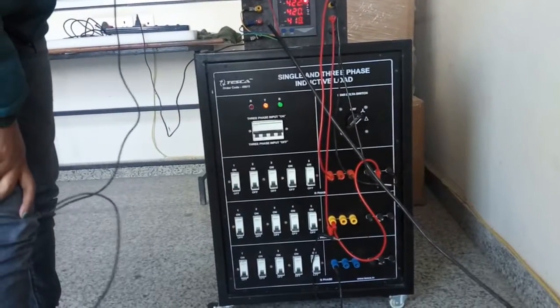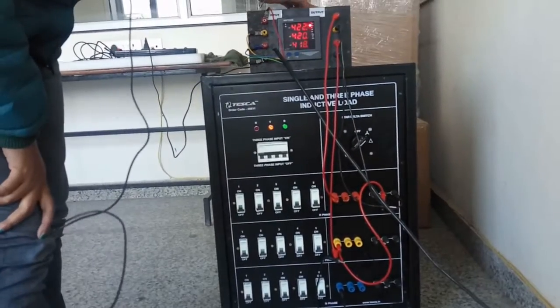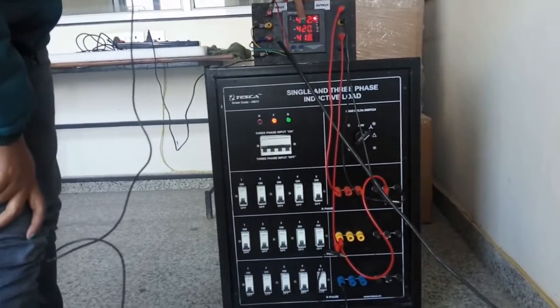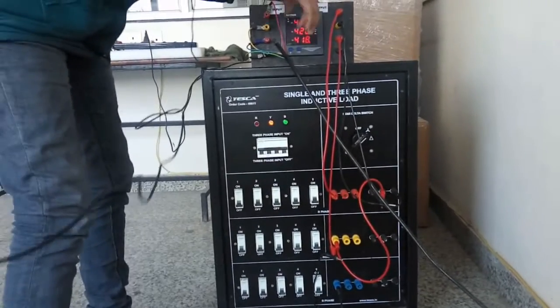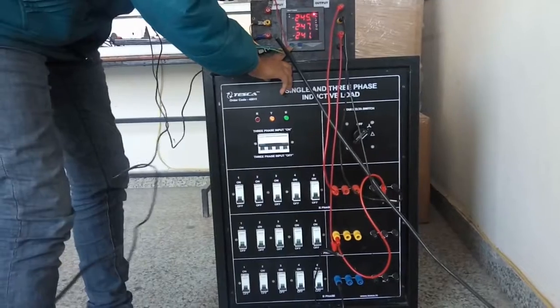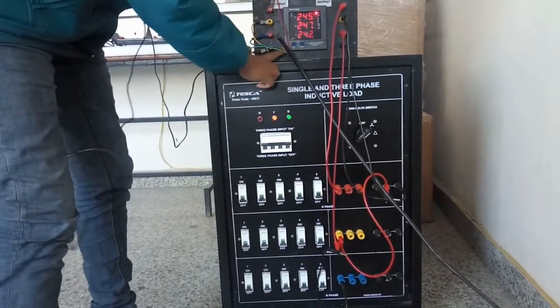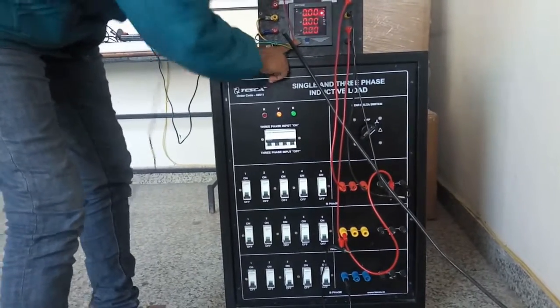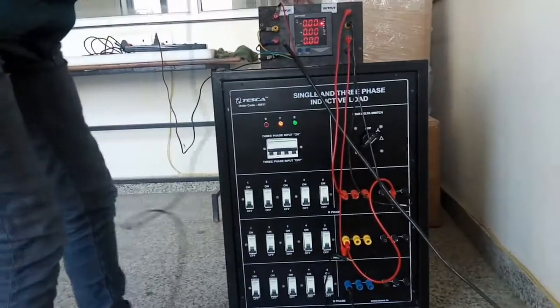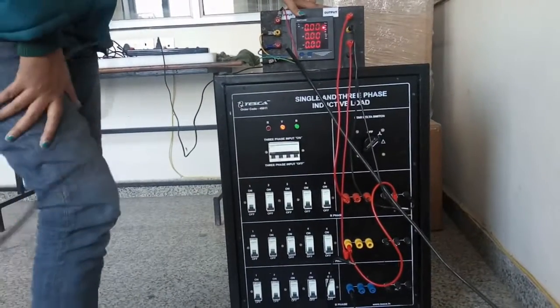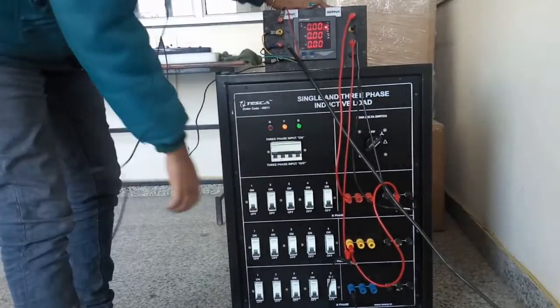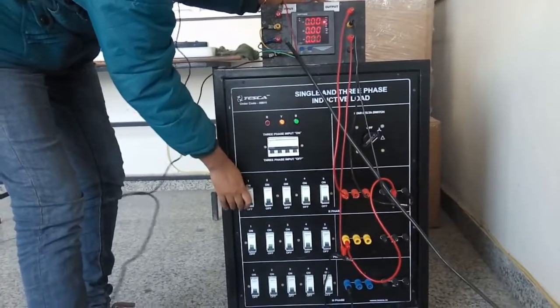Here we have the multi-functional meter. It is showing the line-to-line voltage: 422V, 424V, and 418V. This is a three-phase connection. This is the line-to-neutral voltage for three phase. Now we will observe the current per phase, so turn off the MCBs one by one.